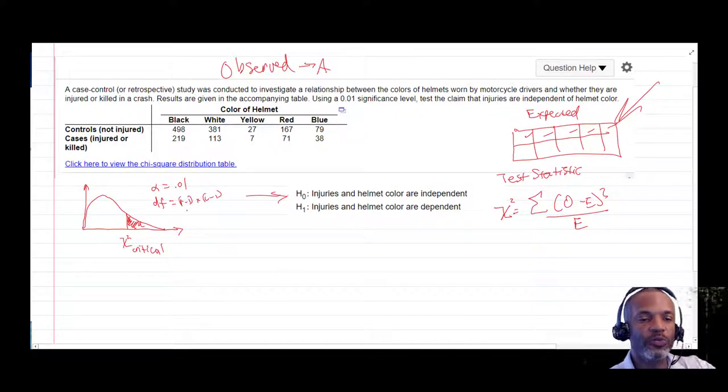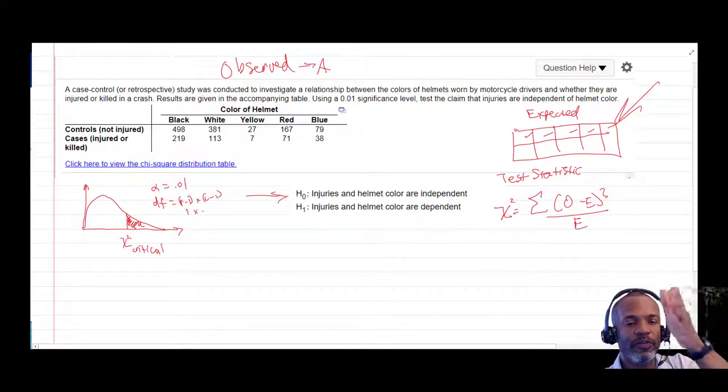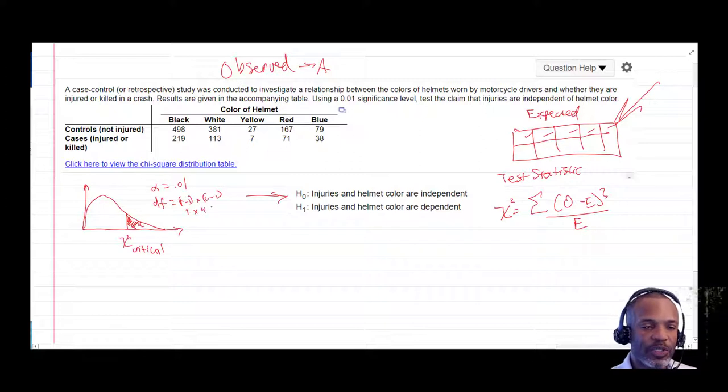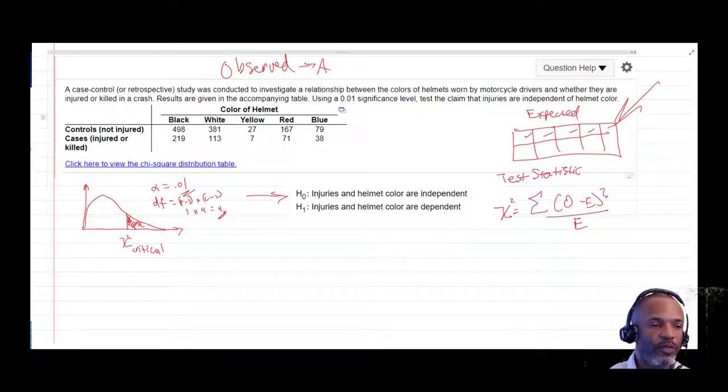The number of rows is 2, so 2 minus 1. The number of columns is 1, 2, 3, 4, 5. 5 minus 1 is 4, so the degrees of freedom is 4. So using the 4 and the 0.01, we can get our critical value.